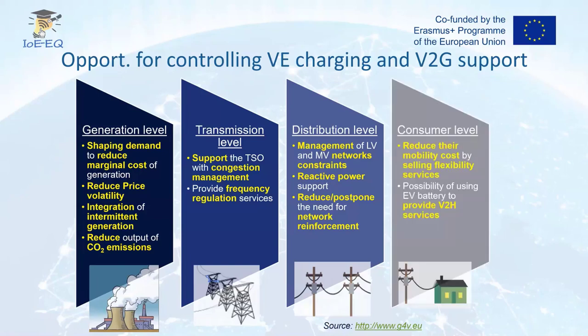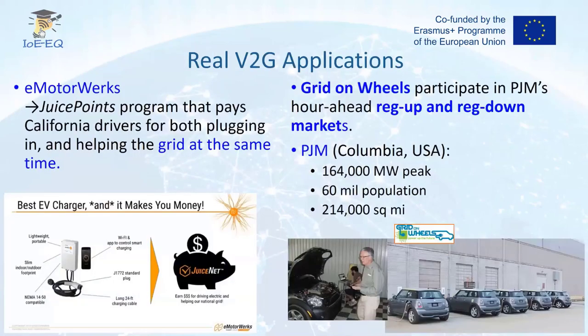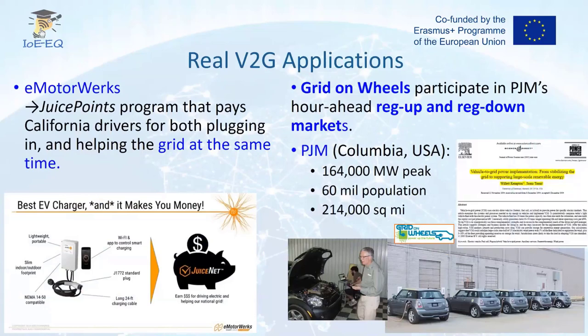There are two examples of real vehicle-to-grid applications working in the U.S. The first one is from eMotorsburg in California, where drivers are paid when they are plugged in and connected to the grid. The other is an application in Colombia called Grid on Wheels, providing ancillary services for the PSO, which is PJM, in the Colombia state. With all these introductions, you have a background to understand what we did in the DATA THEME project.